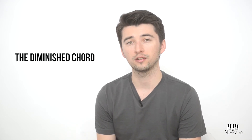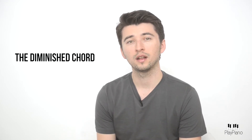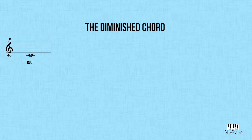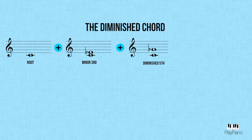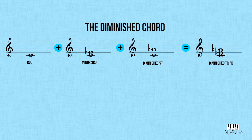The next chord type is diminished. Like the minor triad, the diminished also has a lowered third — a minor third. The diminished chord has a lowered fifth as well, a diminished fifth. If the bass note was C, you would have to write an E-flat and a G-flat above.